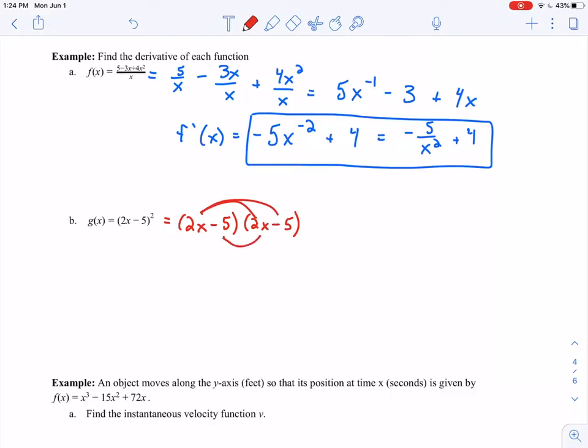So here I am going to have to foil this out. I'm going to have to multiply my terms together. So here if I multiply 2x times 2x, I've got 4x squared. 2x times negative 5 minus 10x. Negative 5 times 2x minus 10x plus 25. So I've got 4x squared minus 20x plus 25.